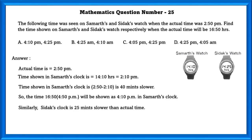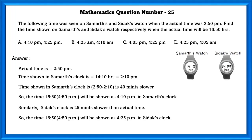Similarly, Siddharth's clock is 25 minutes slower than the actual time. So the time shown in Amit's clock is 4:10 pm and in Siddharth's clock it is 4:25 pm.